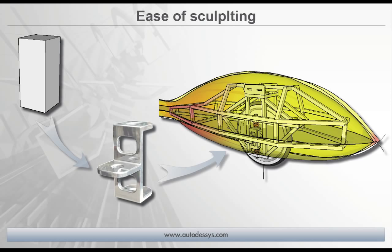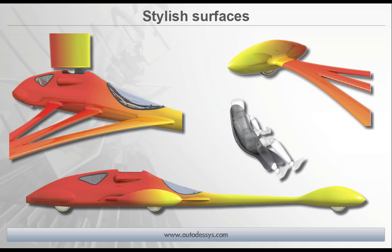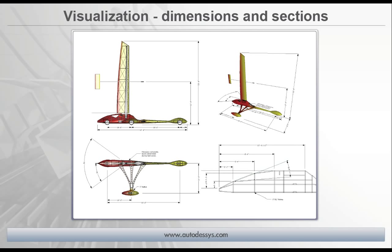We'll also look at the ease of sculpting objects — I'll start with a solid box and reshape it into a detailed object using only a few tools. We'll spend the majority of our time looking at stylish surfaces. You'll see the ease of creating, editing, and manipulating sleek 3D forms, which are commonly used in any type of industrial or product design project. There's a variety of features in Bonsai 3D that can be used to illustrate your design intent, such as textures, dimensions, and section views.